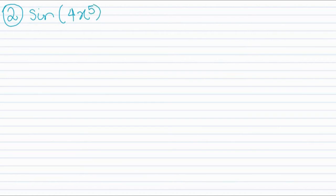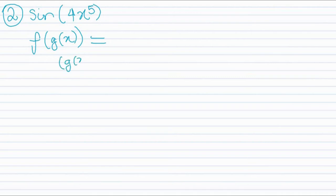The second question is sin(4x⁵) — we're told to differentiate this. It takes the second form f(g(x)), where f(g(x)) = sin(4x⁵) is the outer function and g(x) = 4x⁵ is the inner function.